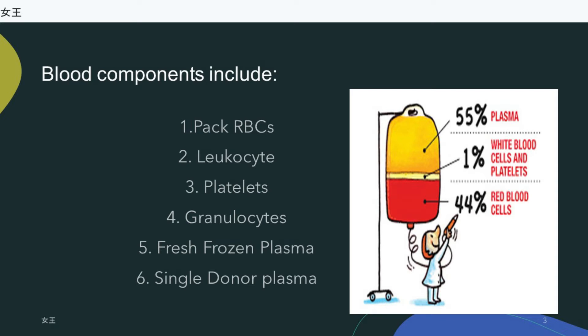Fresh frozen plasma contains all coagulation factors, including the labile factors V and VIII. Single-donor plasma contains all stable coagulation factors but reduced levels of factors V and VIII, and is the preferred product for reversal of coumadin-induced anticoagulation.